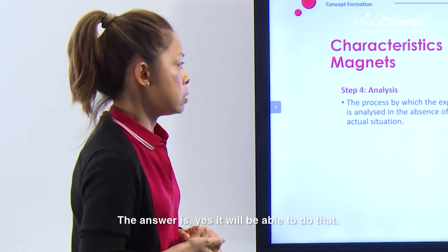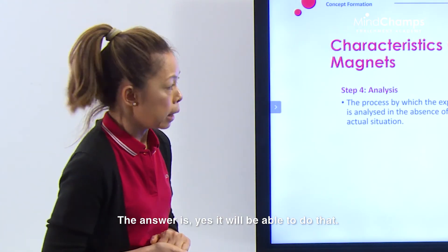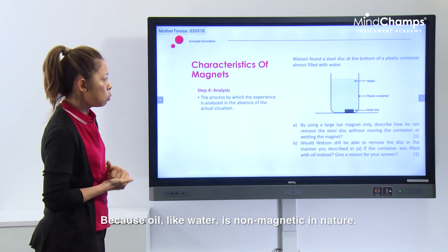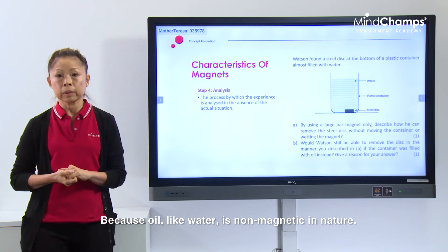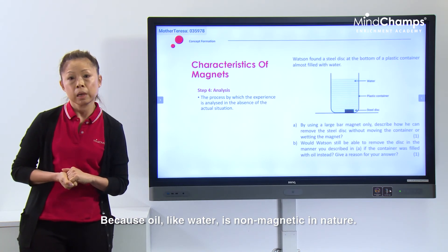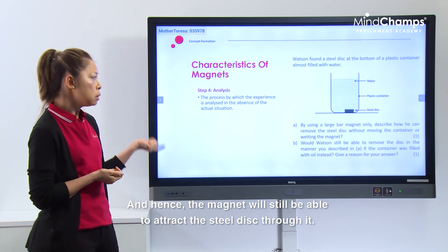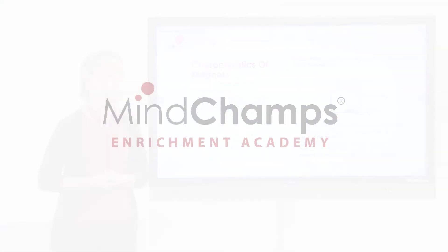The answer is yes, it will be able to do that because oil, like water, is non-magnetic in nature. And hence, the magnet will still be able to attract the steel disc through it.